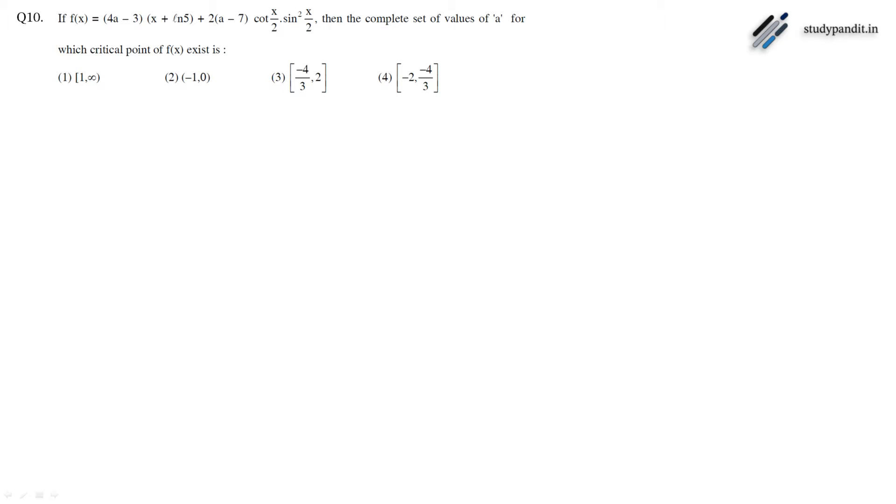Moving on to the next question. In this question, f is given, and we have to find the complete set of values of a for which a critical point of f exists. The function f is equal to (4a-3) times x plus ln of (5 plus 2 times (a-7)) times cot(x/2) divided by 2 times sin squared (x/2).